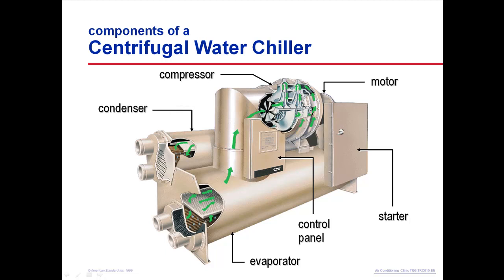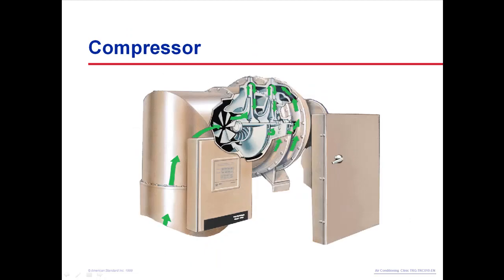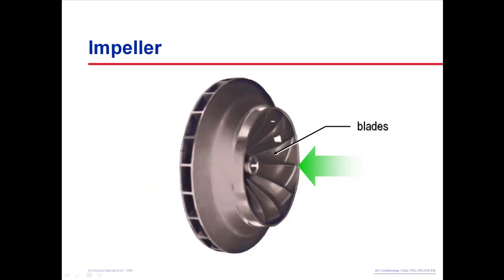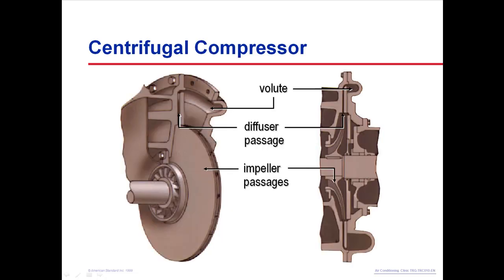The centrifugal compressor uses the principle of dynamic compression, which involves converting energy from one form to another to increase the pressure and temperature of the refrigerant. It converts kinetic energy to static energy. The core component of a centrifugal compressor is the rotating impeller. The center of the impeller is fitted with blades that draw refrigerant vapor into radial passages internal to the impeller body. The rotation of the impeller causes the refrigerant vapor to accelerate within the impeller passages, increasing its velocity and kinetic energy.